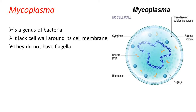For locomotion, mycoplasma does not consist of flagella. We have seen the presence of flagella in eubacteria, but mycoplasma does not have flagella. So these are the two major differences between eubacteria and mycoplasma — mycoplasma lacks cell wall and flagella.